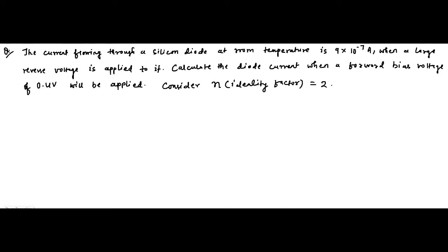It has been mentioned to consider the ideality factor as 2. Now we have to solve it. In order to solve it, the most important thing here is the diode current equation. The diode current equation can be written as I = I₀ × (e^(V / η·VT) − 1).